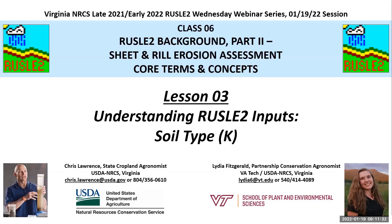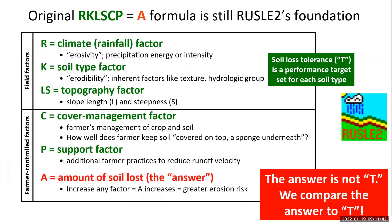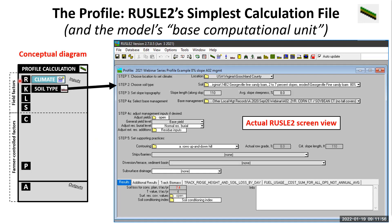On to lesson three in our overview of sheet and rill erosion assessment core terms and concepts. This covers the K factor, also called soil type. The original RUSLE2 formula, R·K·L·S·C·P = A, is still the foundation. These are the five factors. Step two in a profile calculation is to choose your soil type, and that selection provides key information to RUSLE2.